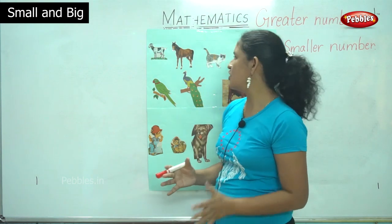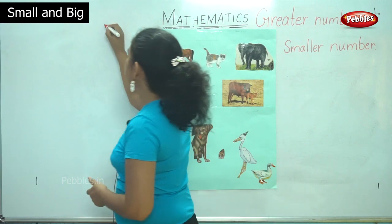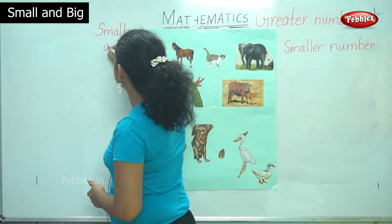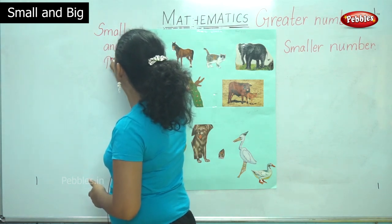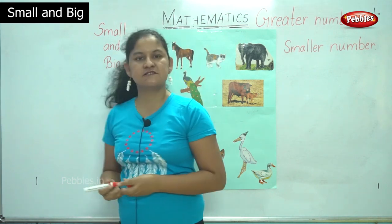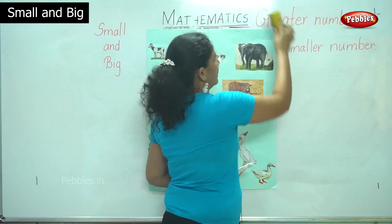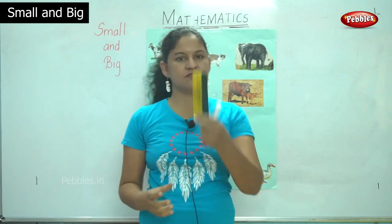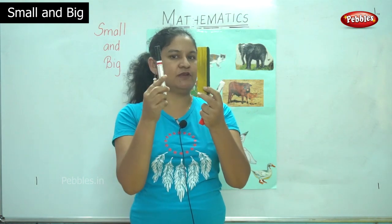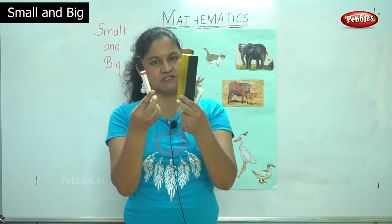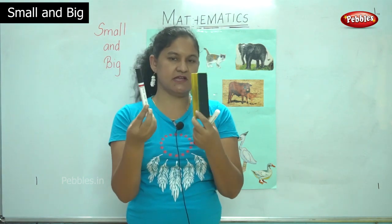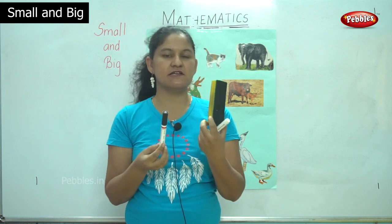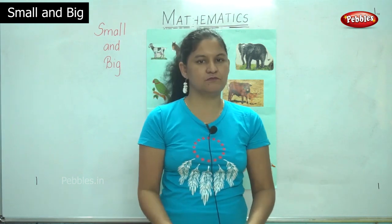Our next concept will be small and big. Just by looking at two things we will be able to understand which is small and which is big. For example, I have the duster in my left and the whiteboard marker on my right. When we compare these two, we could say which is smaller and which is bigger. The marker pen is smaller than the duster, or the duster is bigger when compared to the whiteboard marker.